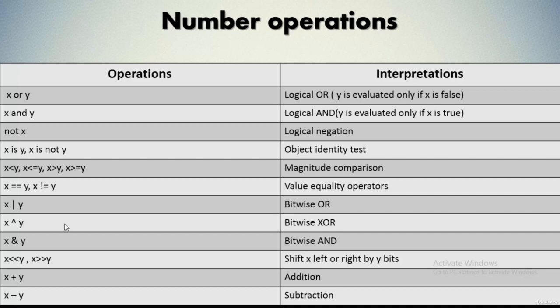Next we have the object identity test, which you can apply as x is y or x is not y. Then we have magnitude comparison — you can compare the magnitude of number type values using the less than, less than or equal to, greater than, and greater than or equal to operators. Next we have value equality operators: to specify whether two values are equal or not, we use the equal to (==) and not equal to (!=) operators.